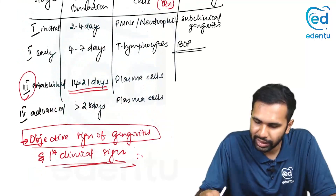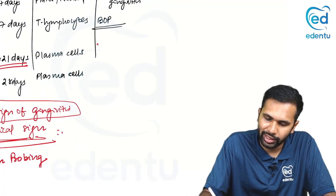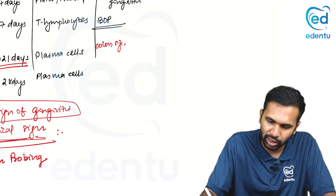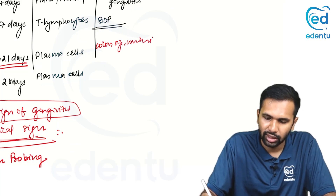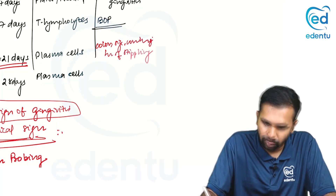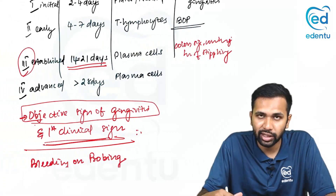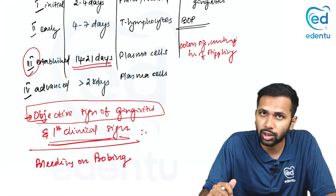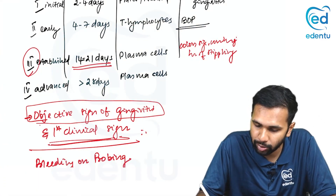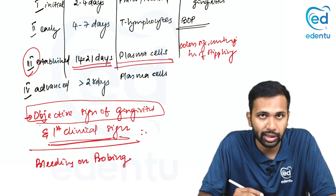What are the changes in stage 3? All the changes you can attribute — changes to color, changes to size, changes to consistency, loss of stippling — everything can be observed in stage 3, referred to as chronic gingivitis. The predominant cells are your plasma cells or B lymphocytes.